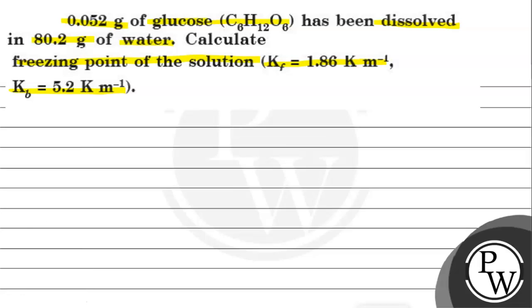So first of all, what is the key concept of this question? Key concept of this question will be delta Tf equals Kf into m, where delta Tf is depression in freezing point.